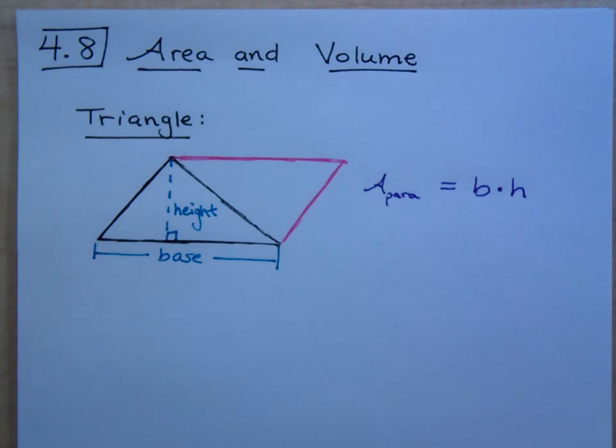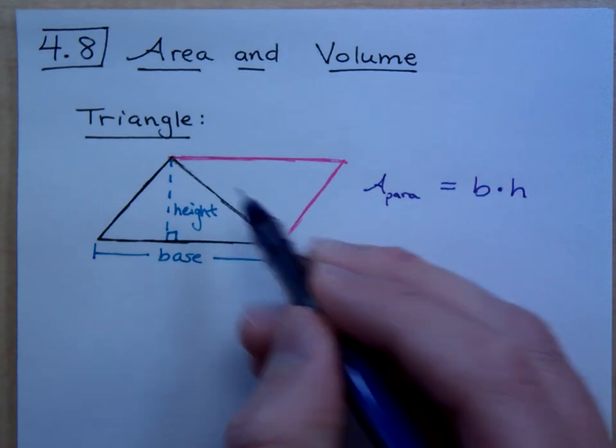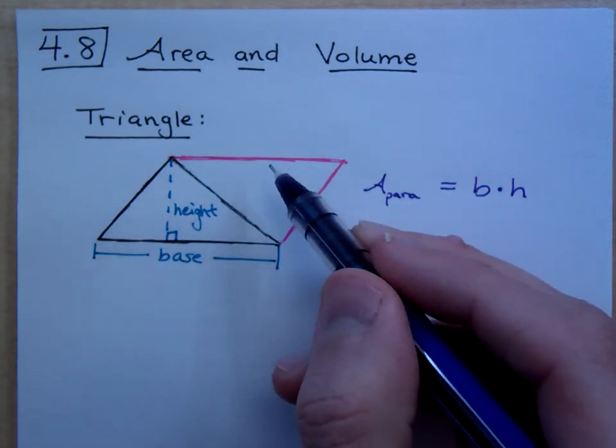But this triangle only takes up how much of that whole area? What is the area for this triangle right here, the one that's in black? Is it the whole area? It's just half of it, right?